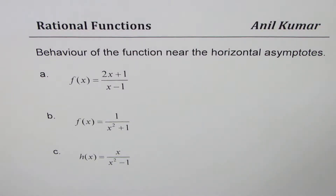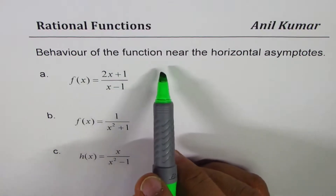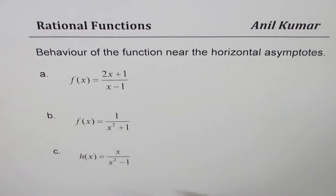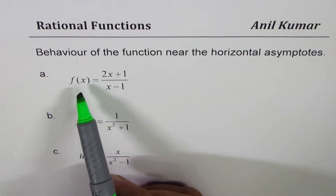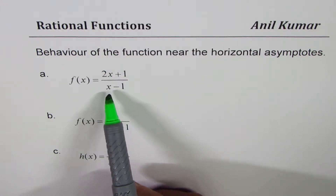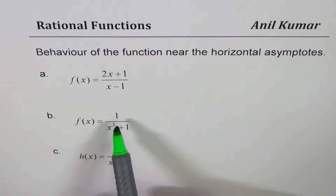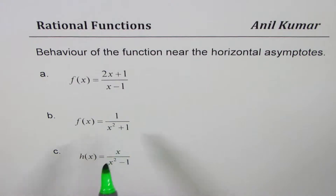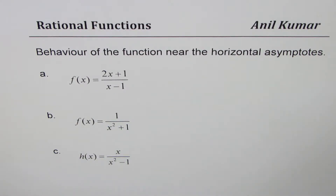I'm Anil Kumar and in this video I'll discuss behavior of the function near horizontal asymptotes. We have three different examples to discuss. The first one is f of x equals to 2x plus 1 divided by x minus 1. The second one is f of x equals to 1 over x squared plus 1. And the third one is h of x equals to x over x squared minus 1.